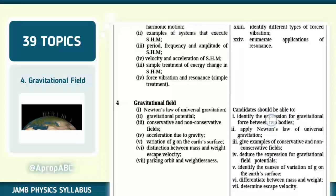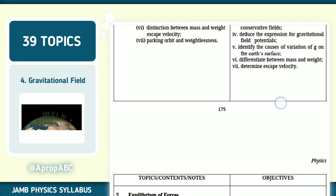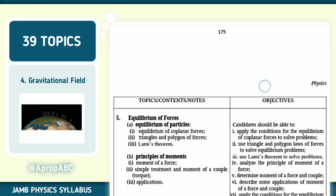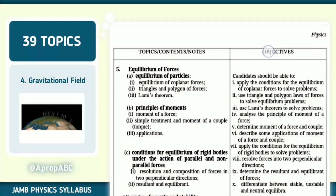The fourth one, we have gravitation. Newton's law of universal gravitation, gravitational potential, conservative and non-conservative field, gravity field, acceleration due to gravity, variation of G on Earth's surface, distinction between mass and weight, escape velocity. All of these things under gravitation. You can determine escape velocity. You know the difference between mass and weight.